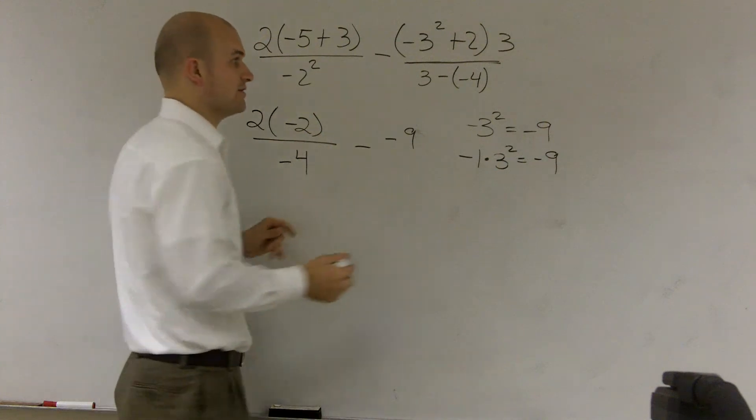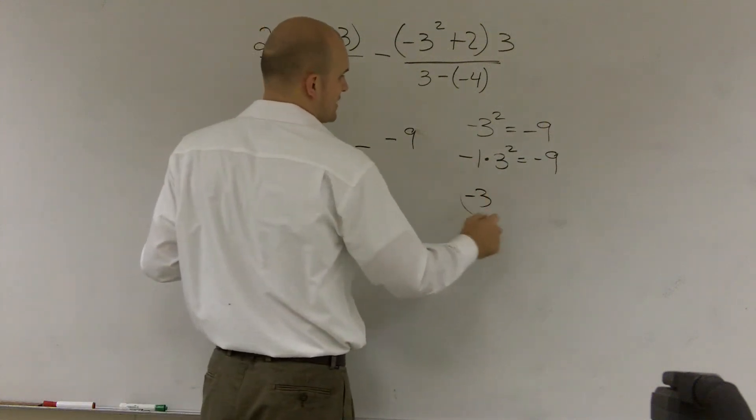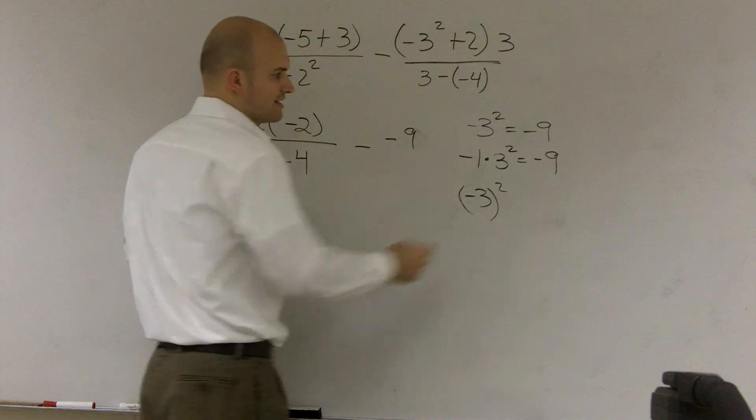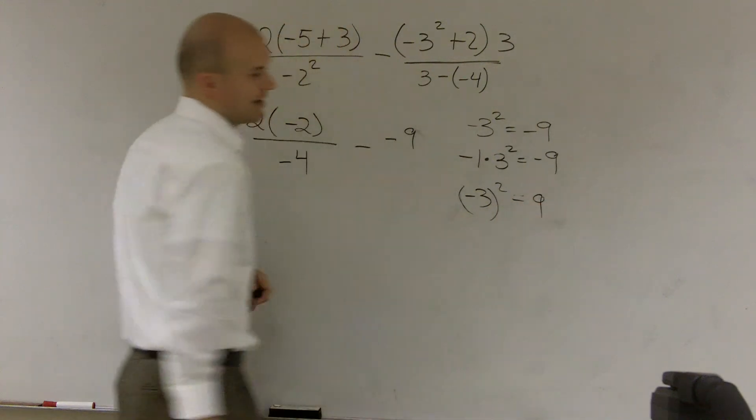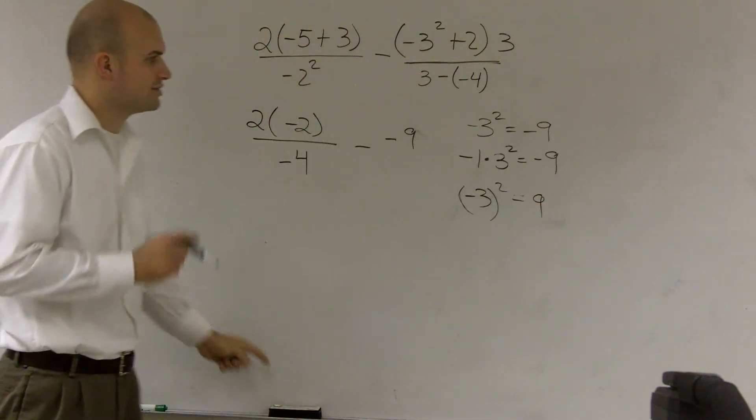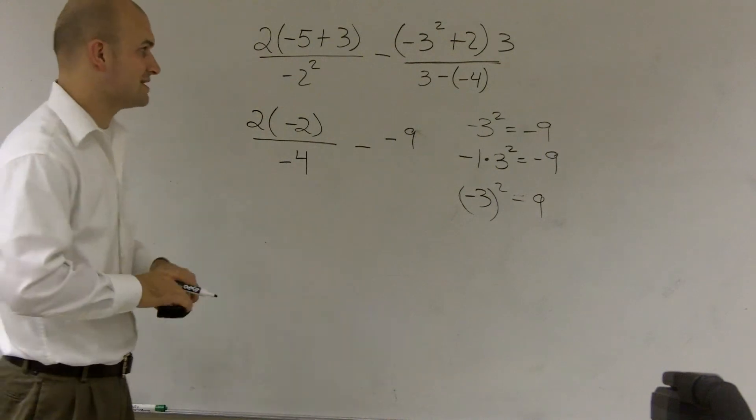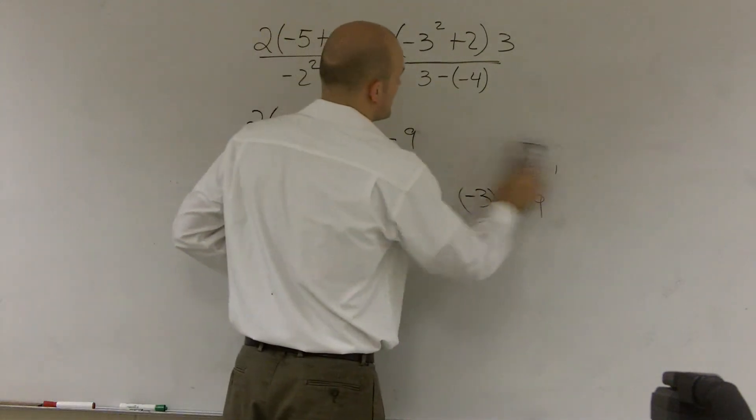If I wanted just to square the negative 3, it would be negative 3 in parentheses squared. Then I would get that to be a positive 9. So you have to really understand, make sure you clarify the difference.